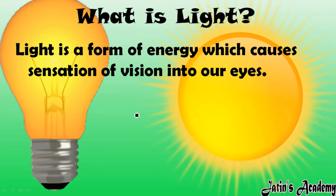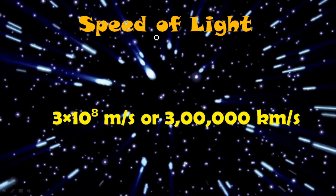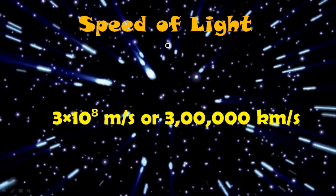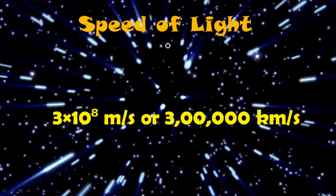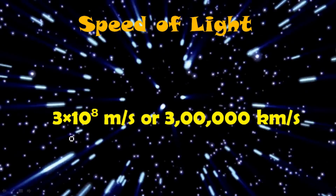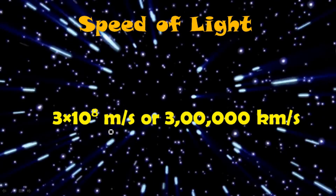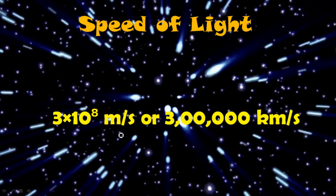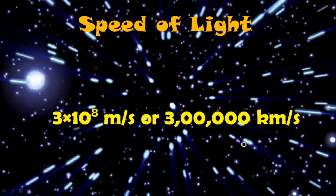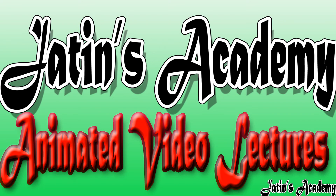The next topic is speed of light. Speed of light means the speed with which light travels in air or in a vacuum. This value you have to learn properly: light travels with the speed of 3×10⁸ meters per second, or if you want to write this value in kilometers per second, it is 3 lakh kilometers per second.